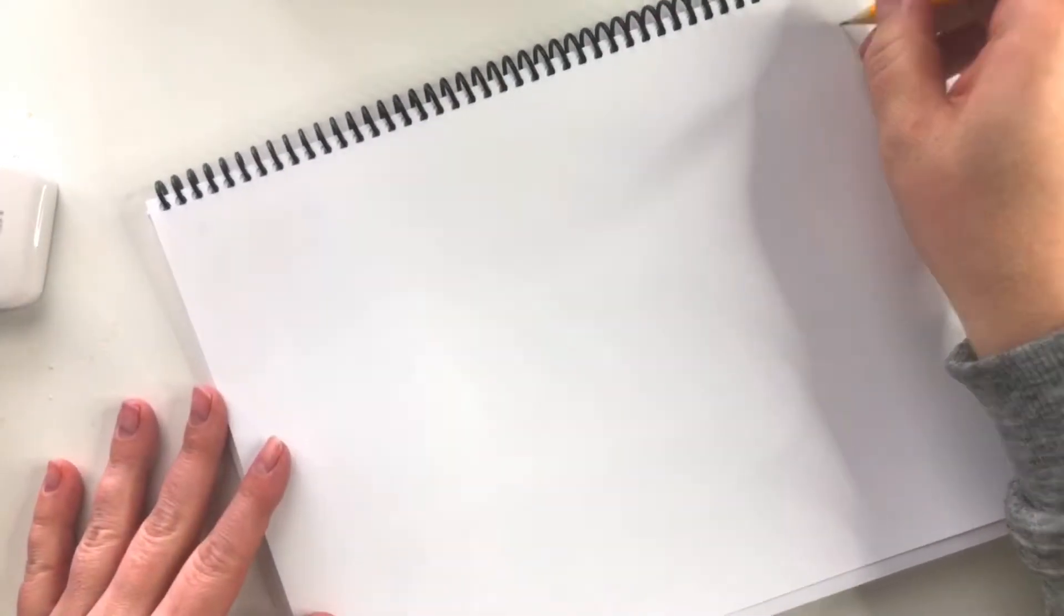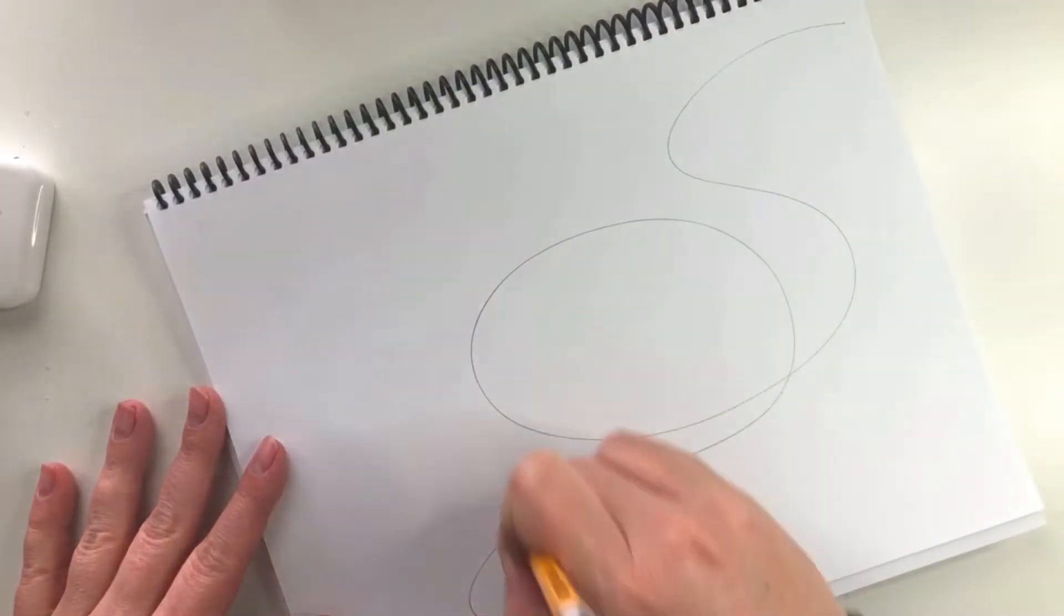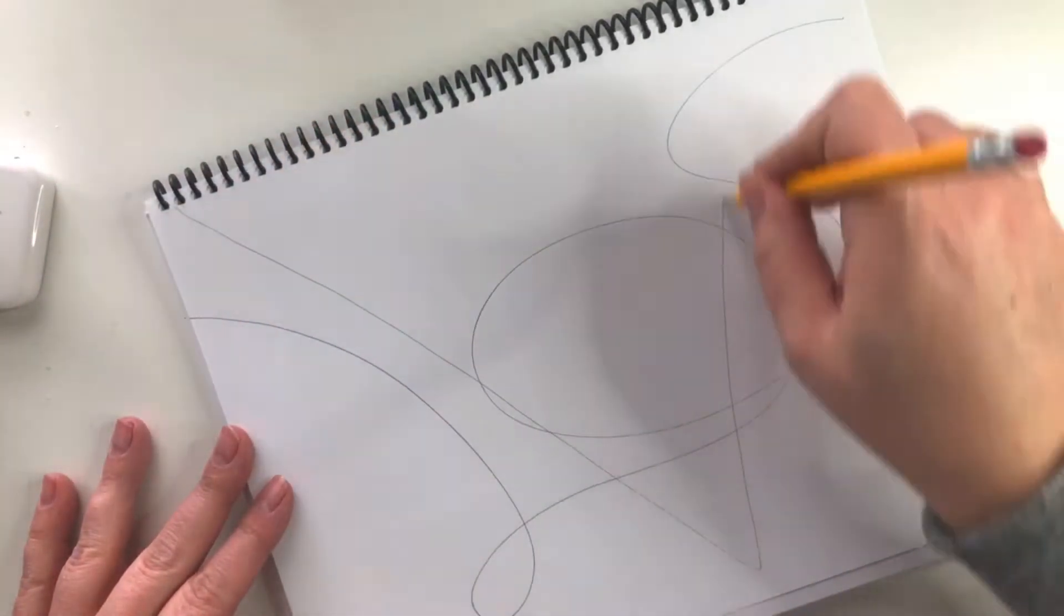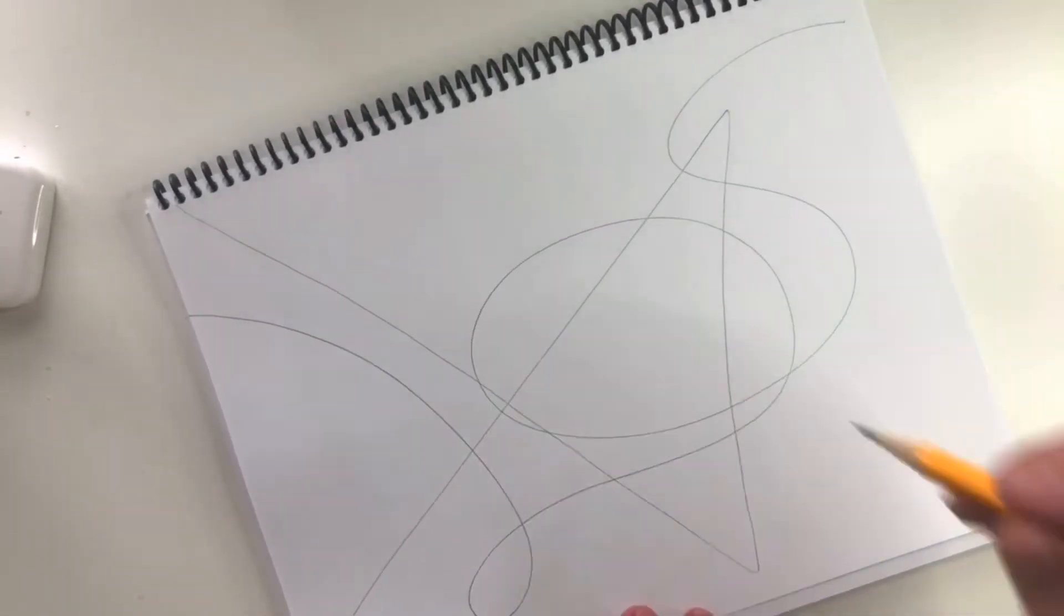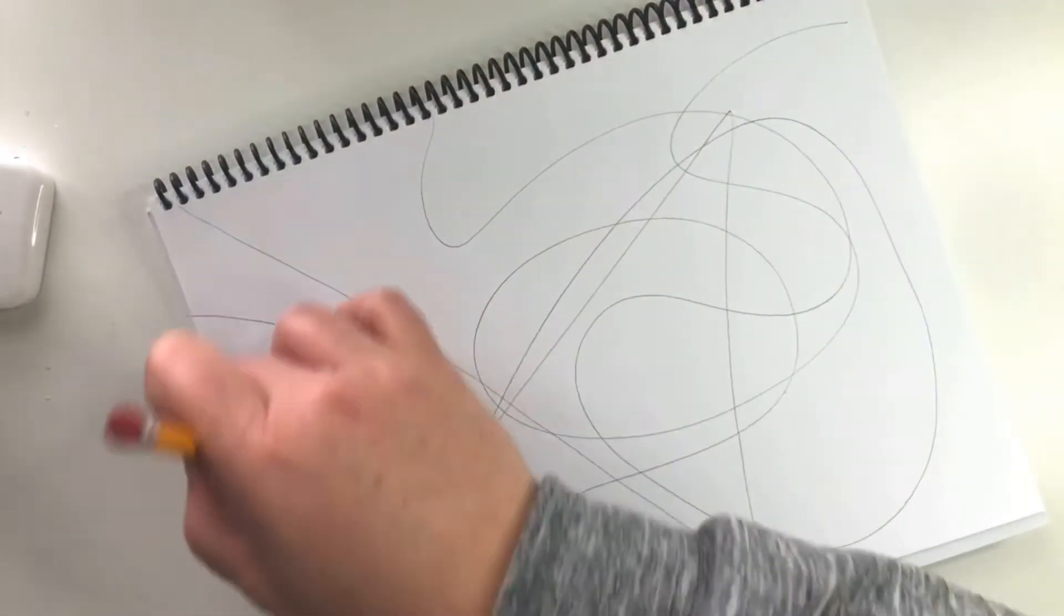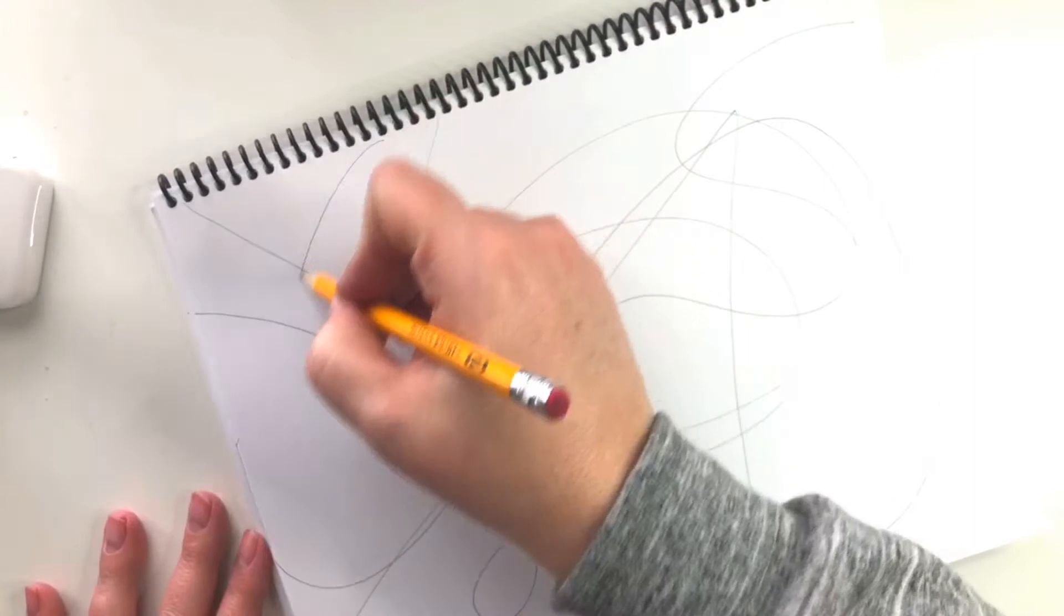You're going to first draw a series of lines that are random, curved and straight. Lines that go off the page are preferable. What we are doing here is really dividing our space up, so that is step one.